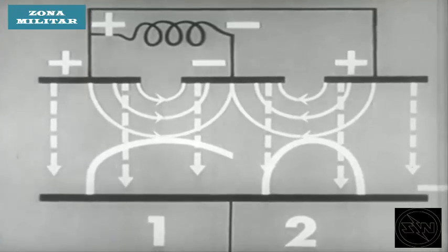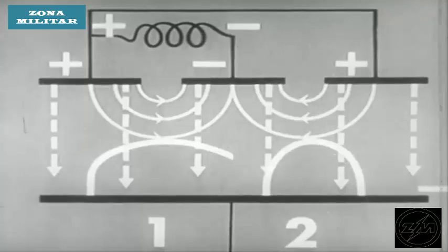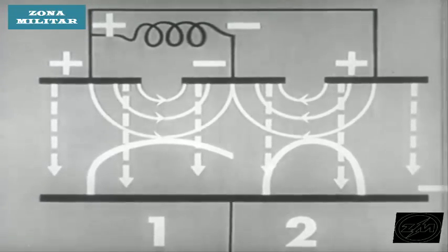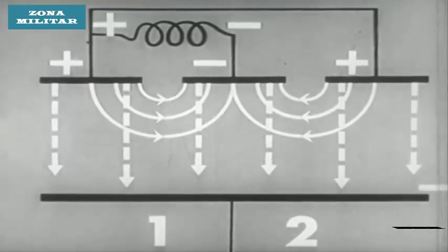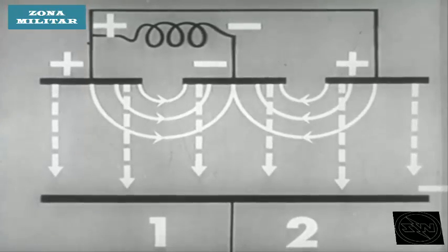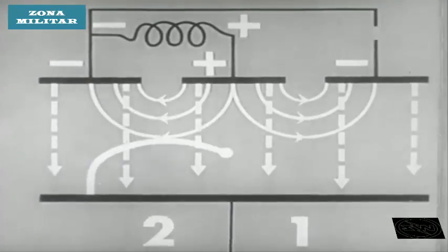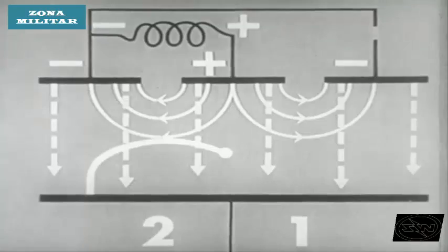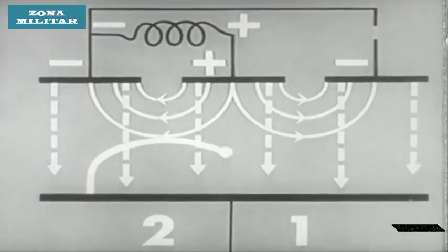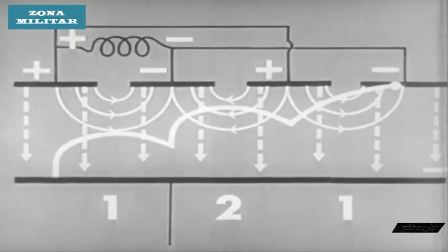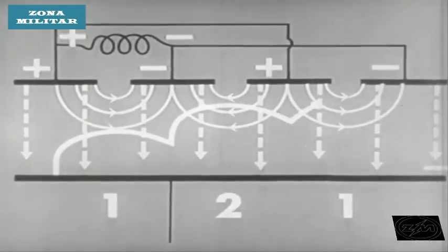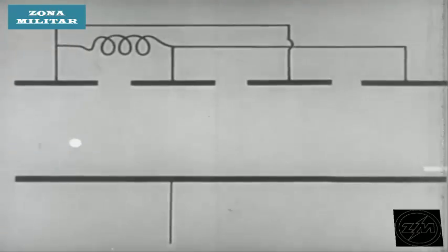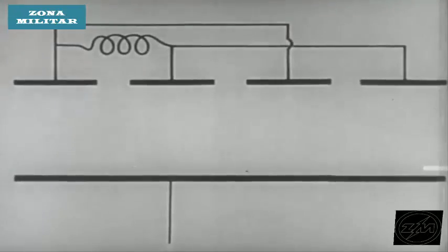The net result is that more energy is given to the RF field by the electron in region one than is taken away from the field by the electron in region two. In this way, tube losses are overcome and oscillation can be maintained. The energy given up by the electrons to the RF field will change the polarity of those fields, so that at the end of one half cycle, the RF fields will be reversed. Thus, the electron which has completed one half cycle in region one will now strike region two in the proper phase relationship to give energy to that RF field. This process will continue until the electron eventually reaches the anode. All electrons which move from the cathode to the anode will follow this course. Of course, in a pulsed magnetron oscillator where the electric field does not exist between pulses, the electrons will be affected only by the magnetic field and so will be returned to the cathode.